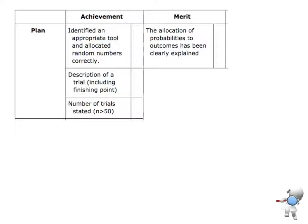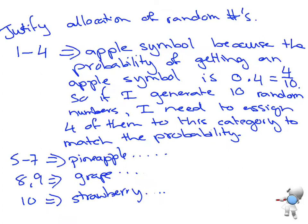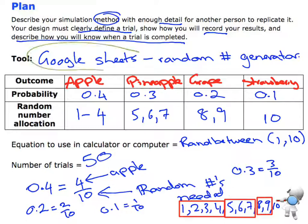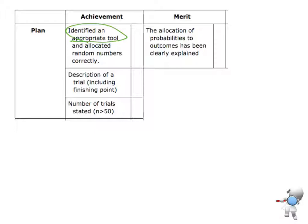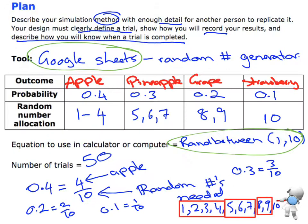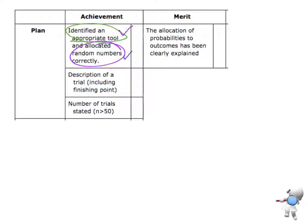Let's double-check against the marking schedule. For the achieved level, I first need to identify an appropriate tool — I've said I'll use Google Sheets with the formula RANDBETWEEN, so those two things together are my appropriate tool. I also need to have allocated random numbers correctly, which is this part of the table where I've allocated those random numbers correctly. So I've completed both of those requirements.